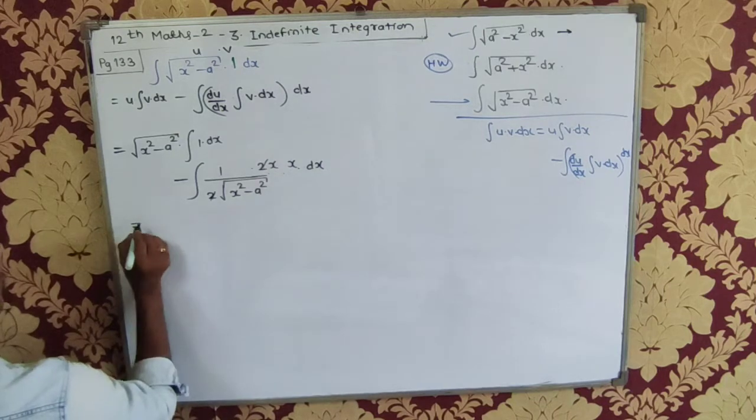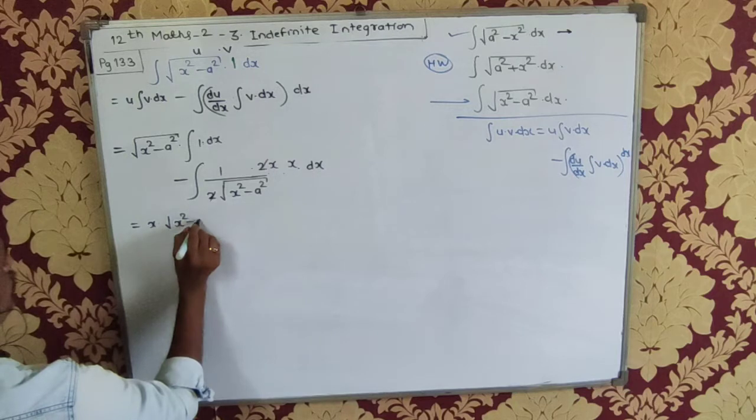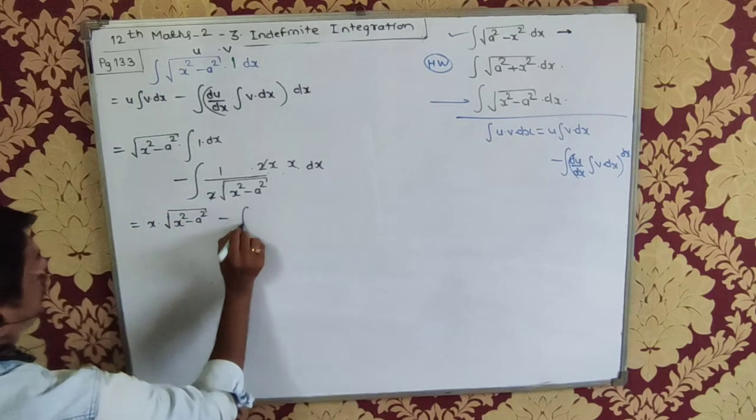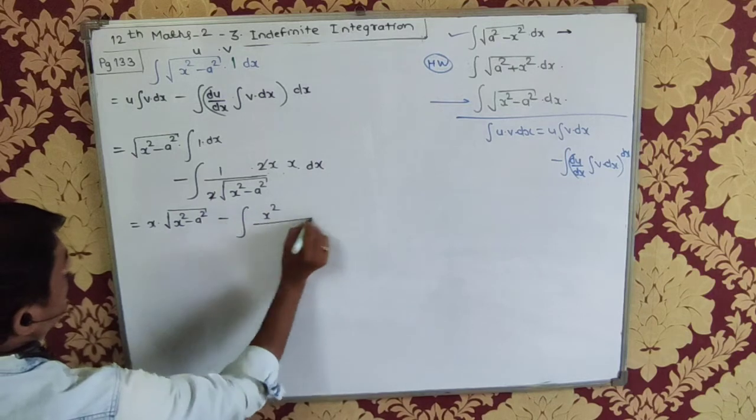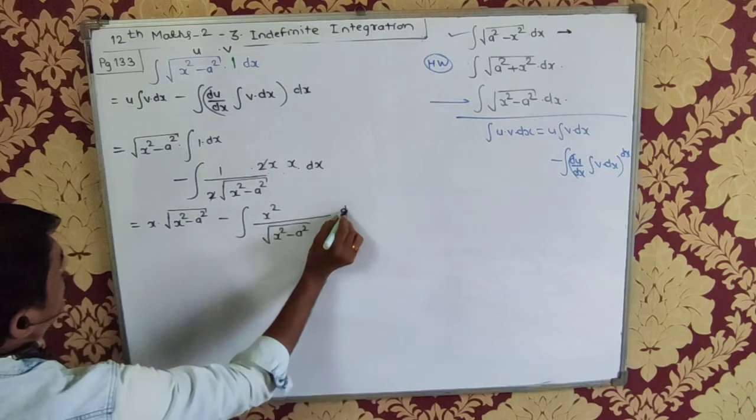So what do we get there? That is equal to x√(x² - a²) minus integration of x²/√(x² - a²) dx.